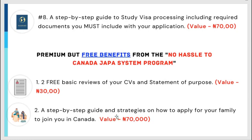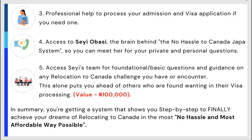Number two: you get a step-by-step guide and strategies for how to apply for your family to join you in Canada. While you are studying, your family will be in Canada as well — children 18 and above will be working. Number three: you get professional help to process your admission and visa application if you need it — the team will help you do this.